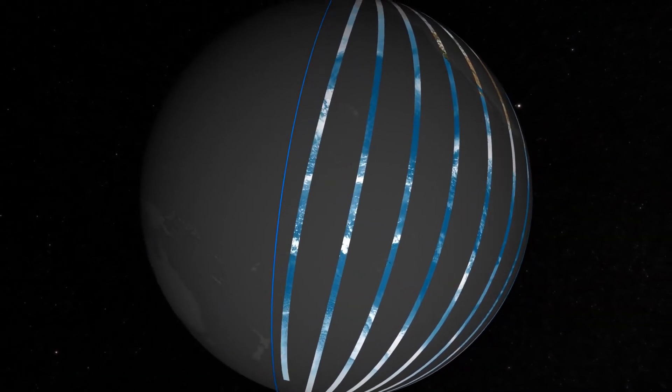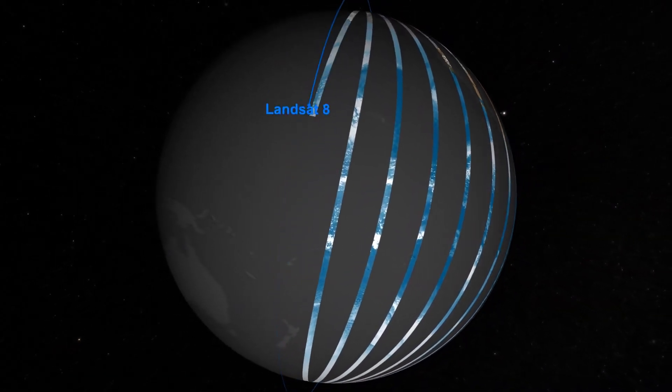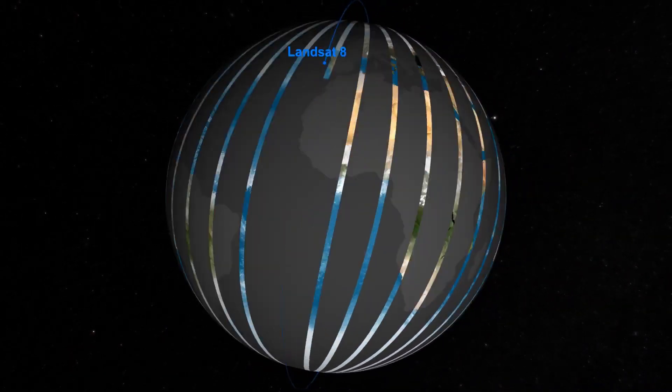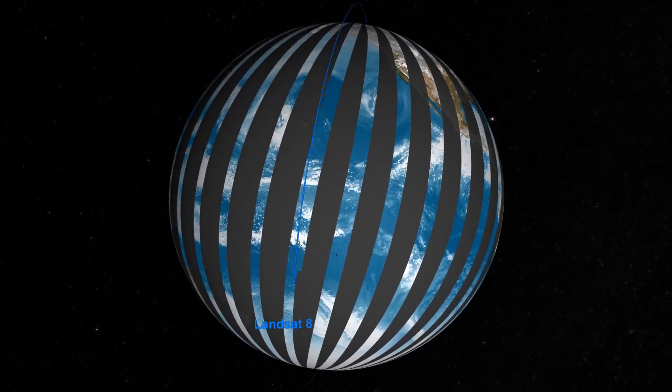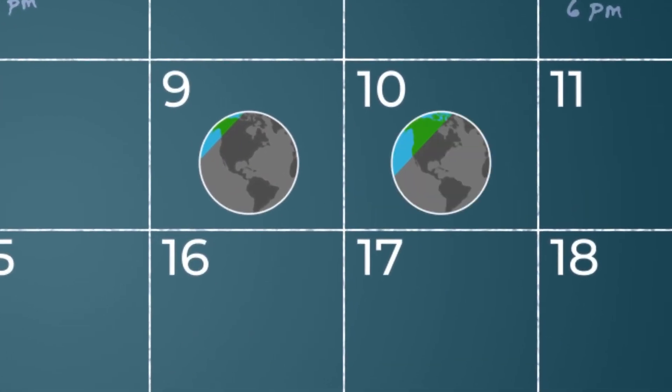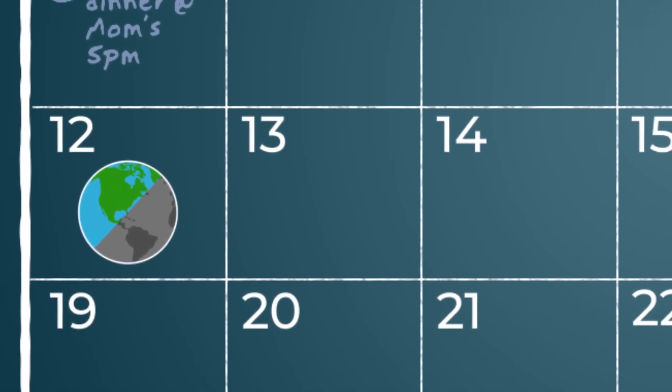It will take Landsat 9 and its sister satellite, Landsat 8, eight days to image all of Earth's land and coastal areas. That means we get a complete picture of Earth every eight days.